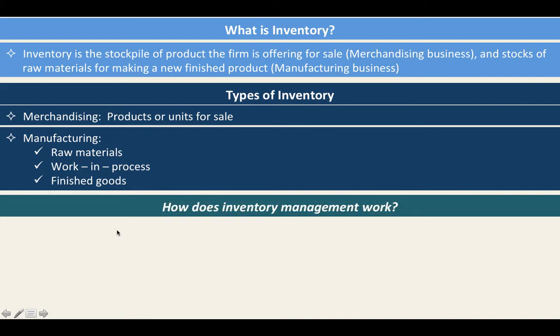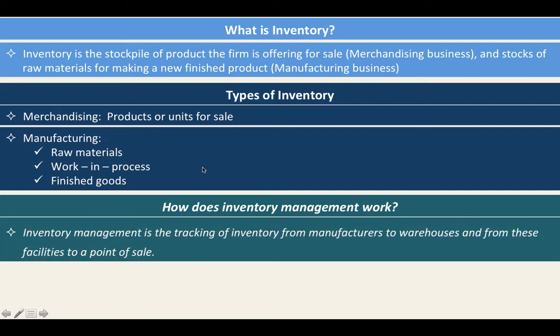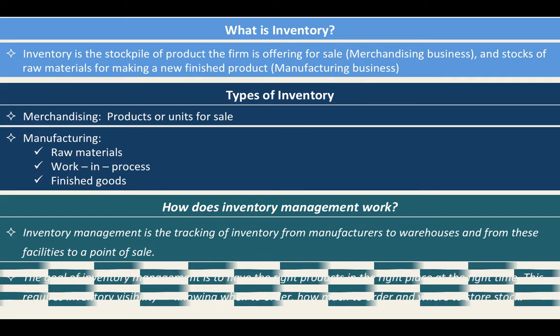Let us discuss how does inventory management work. Inventory management is the tracking of inventory from manufacturers to warehouses and from these facilities to the point of sale. So you will be able to track where the inventory is — that is how inventory management works.